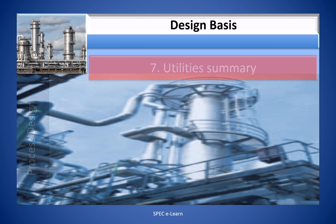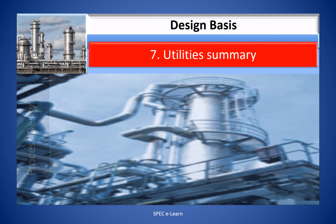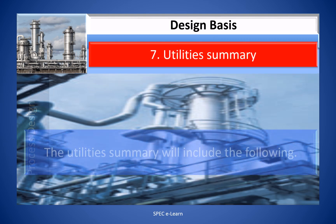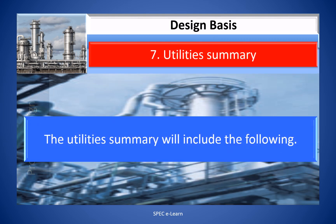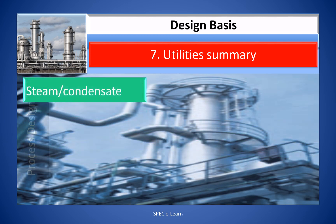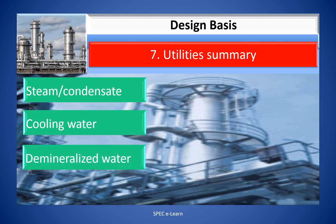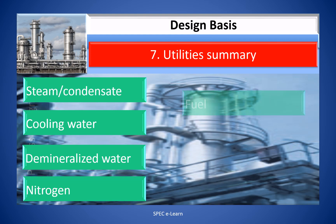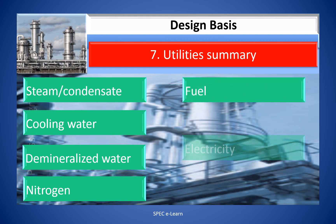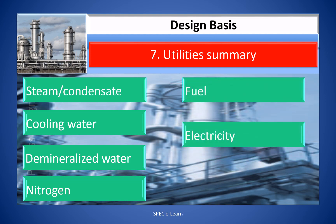Seven: Utility Summary and Balance. Utility summary will include the following: steam and condensate, cooling water, de-mineralized water, nitrogen, fuel, and electricity.